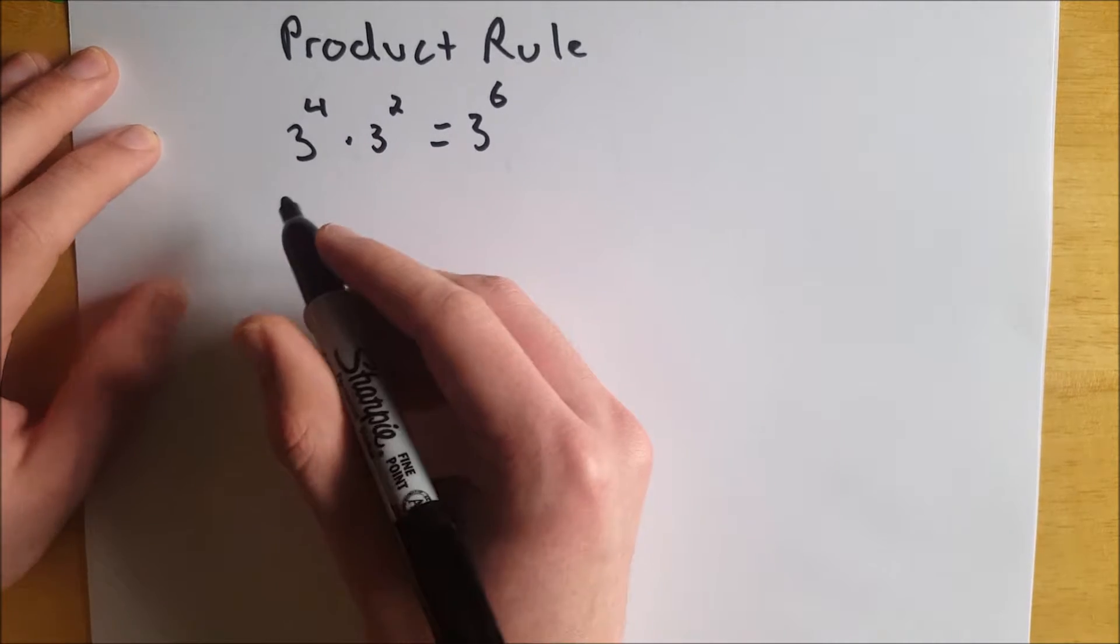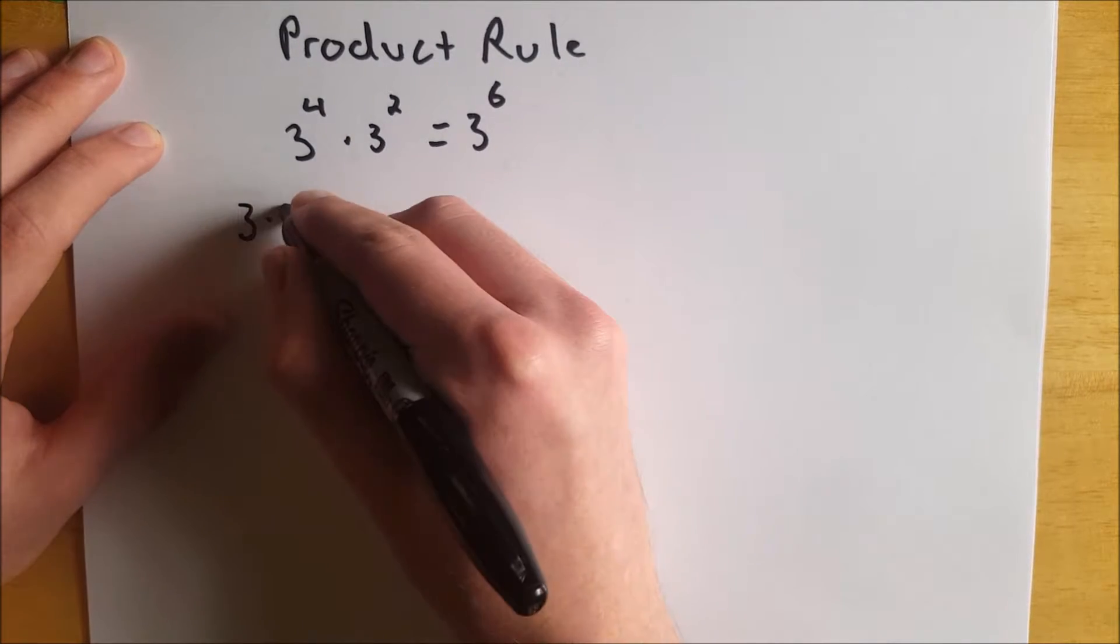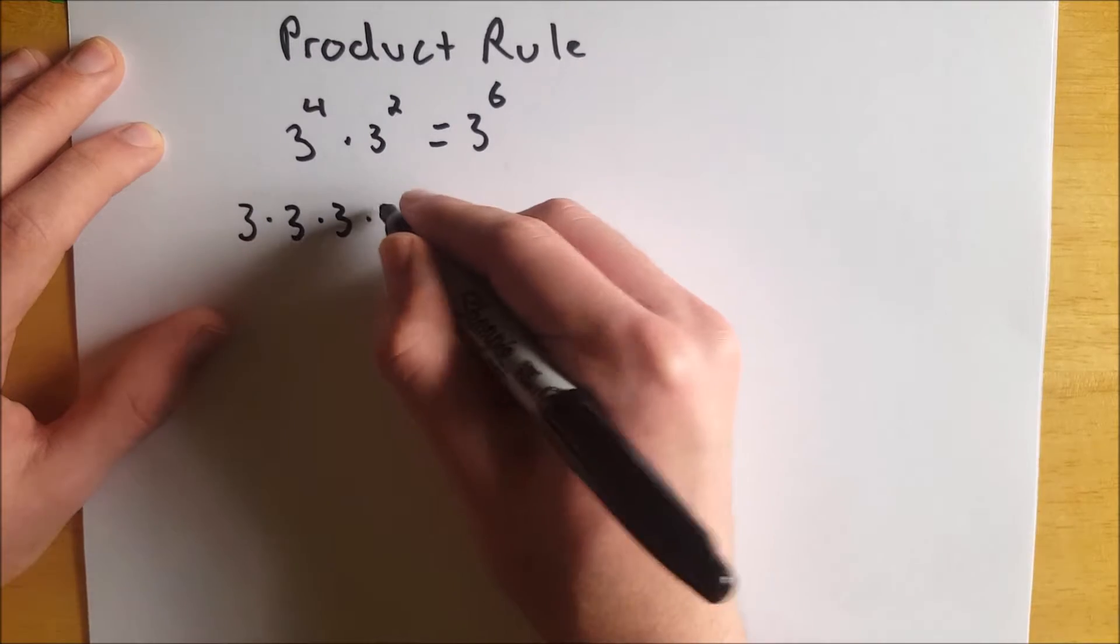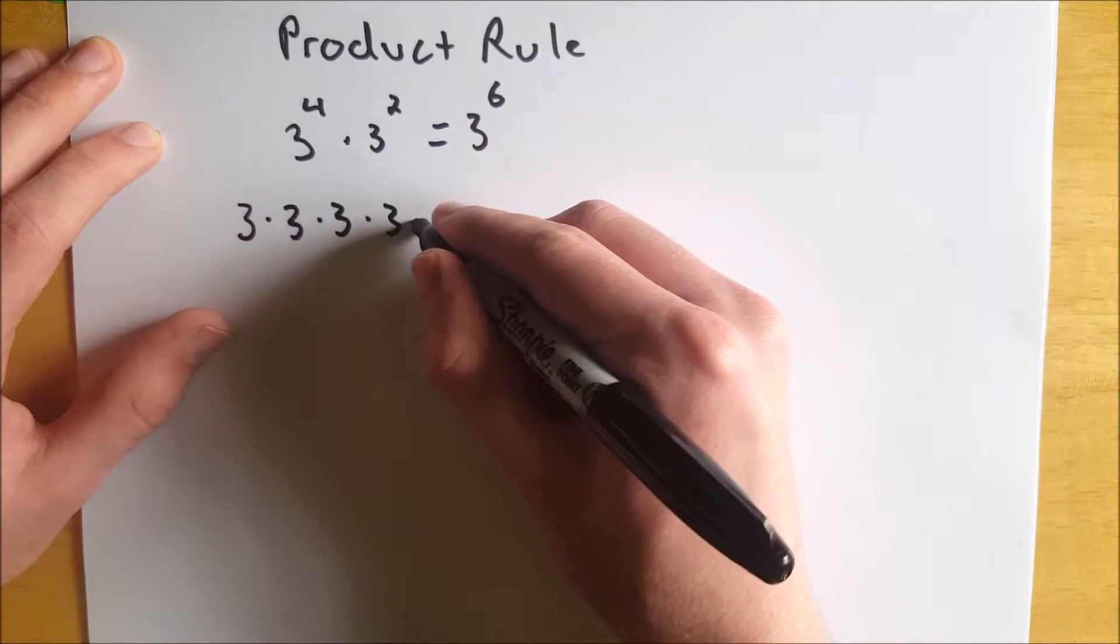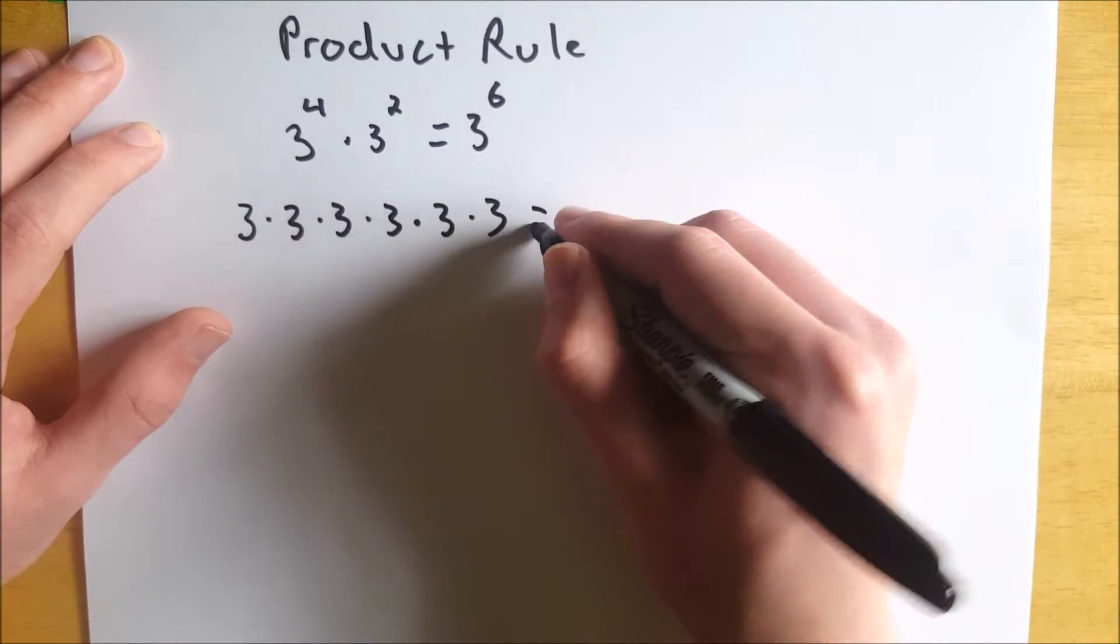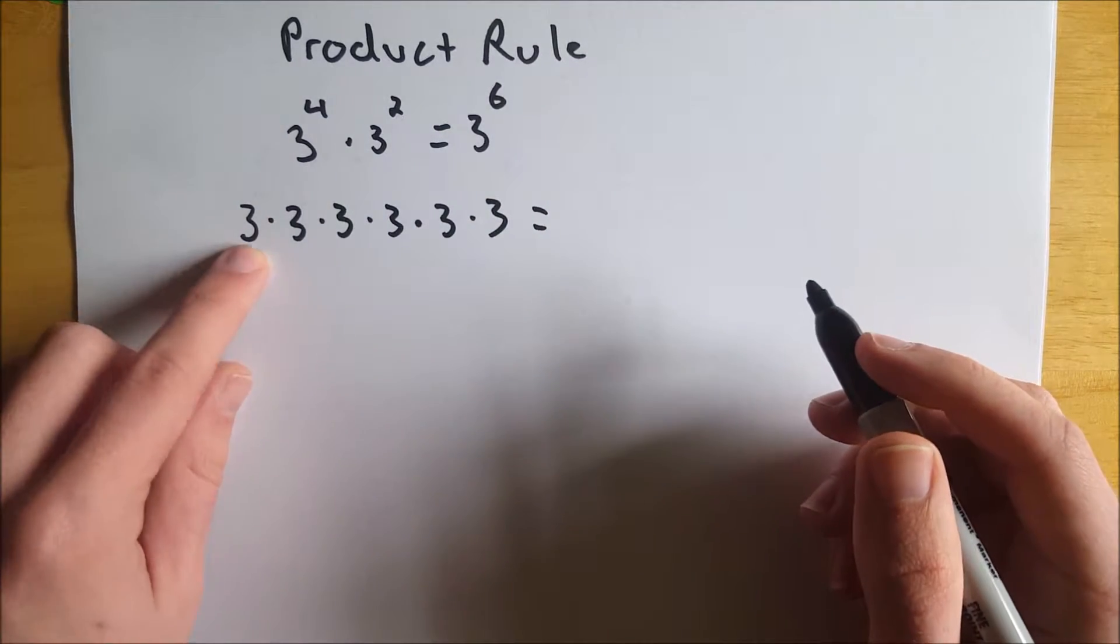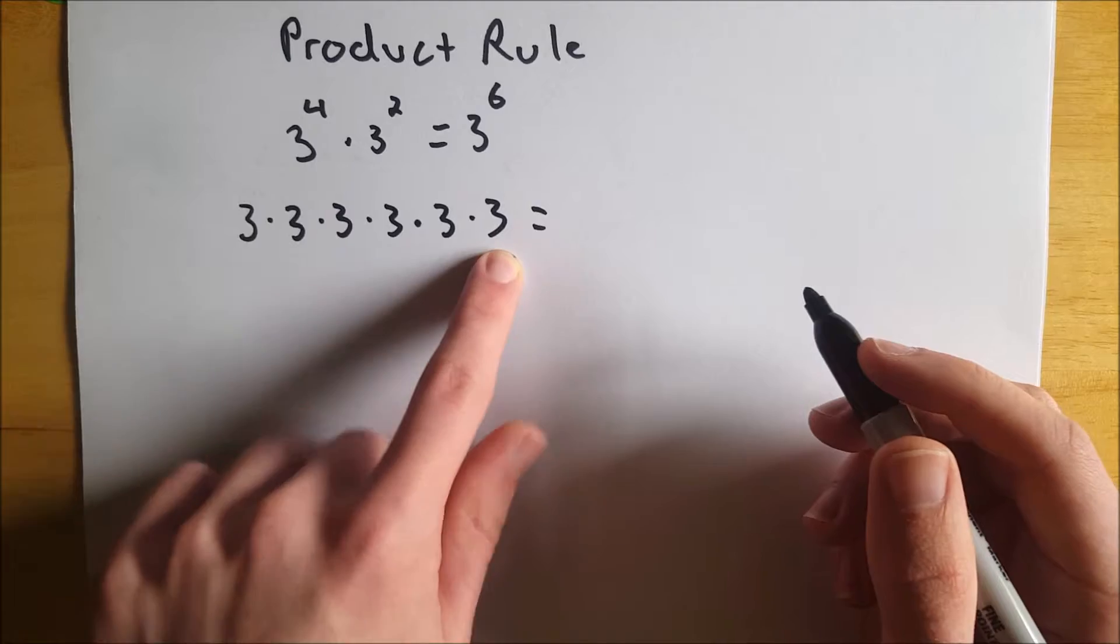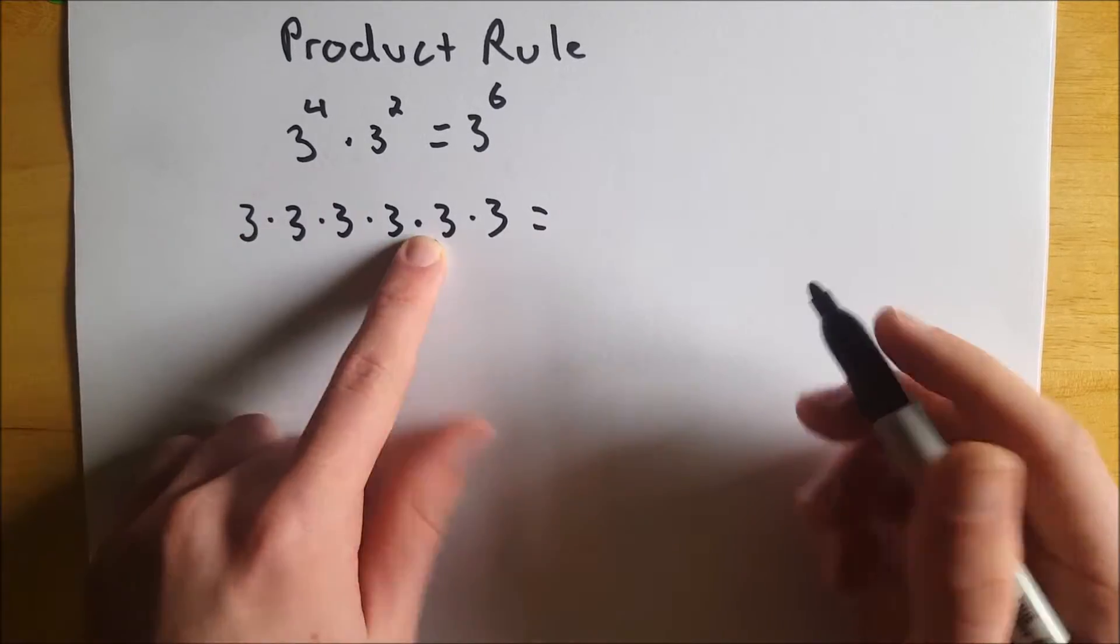Well to see it, all you really have to do is write it out. So we have 3 to the 4th, which is 3 times 3 times 3 times 3, and that's multiplied by 3 squared, which is 3 times 3. And you can see very clearly here, this is effectively the definition of 3 to the 6. We've got six 3's,